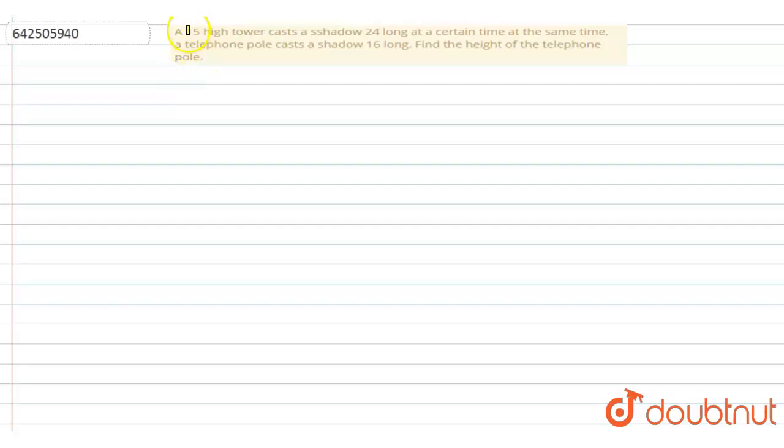Hello friends, here the question says: a 15 meter high tower casts a shadow 24 meters long at a certain time. At the same time, a telephone pole casts a shadow 16 meters long. Find the height of the telephone pole.